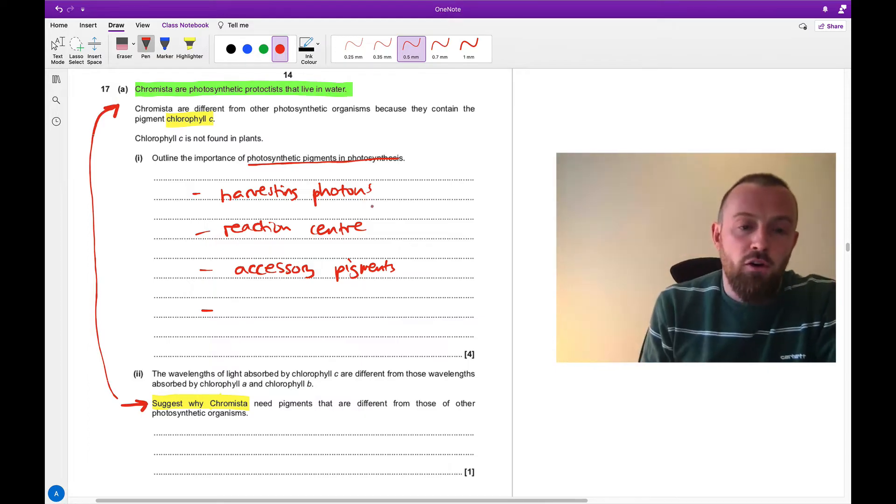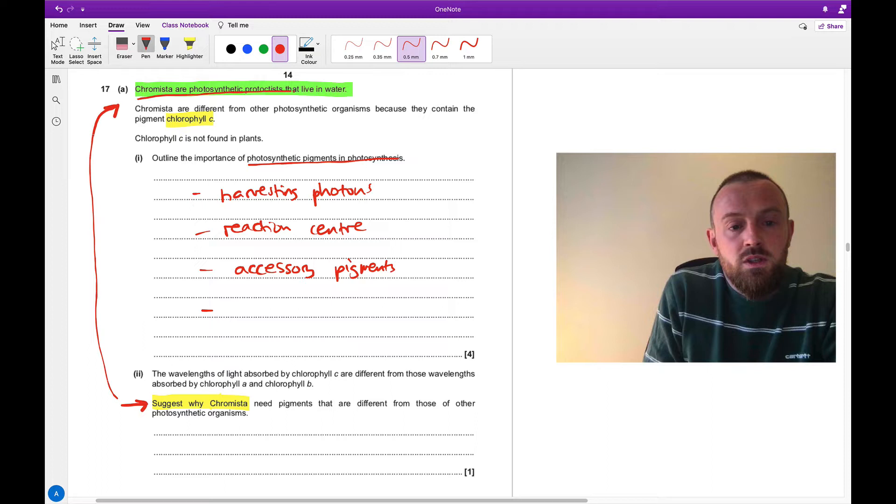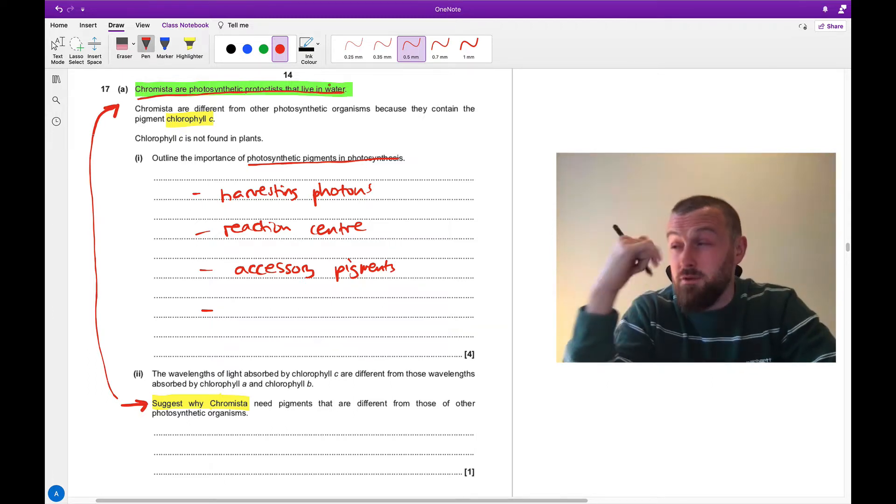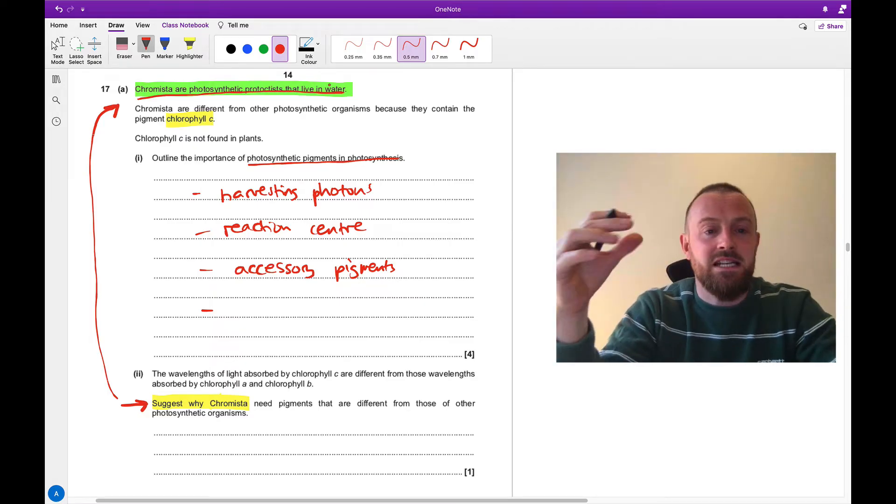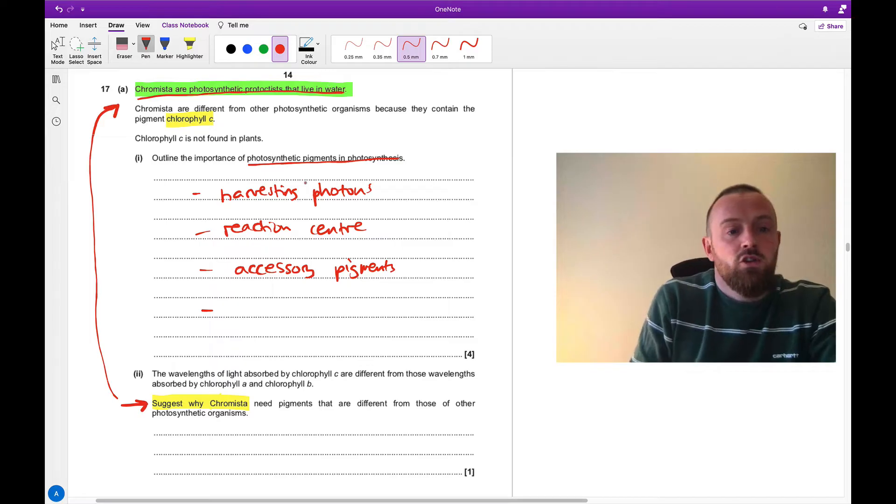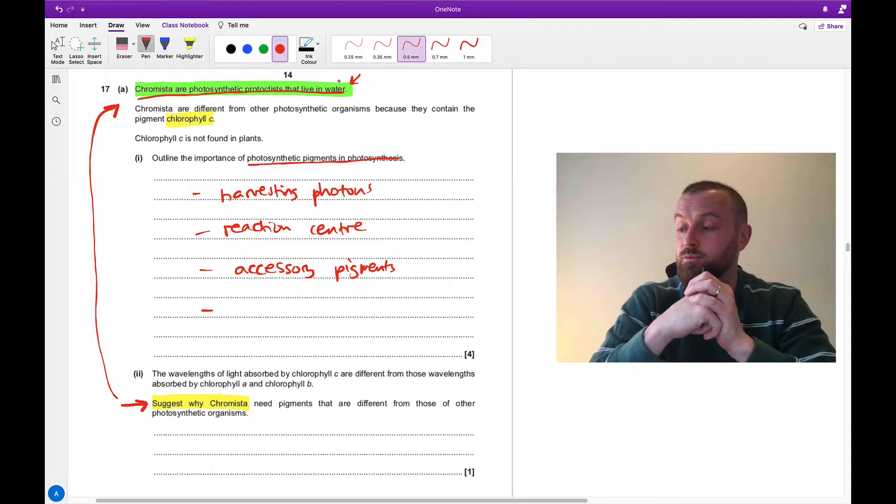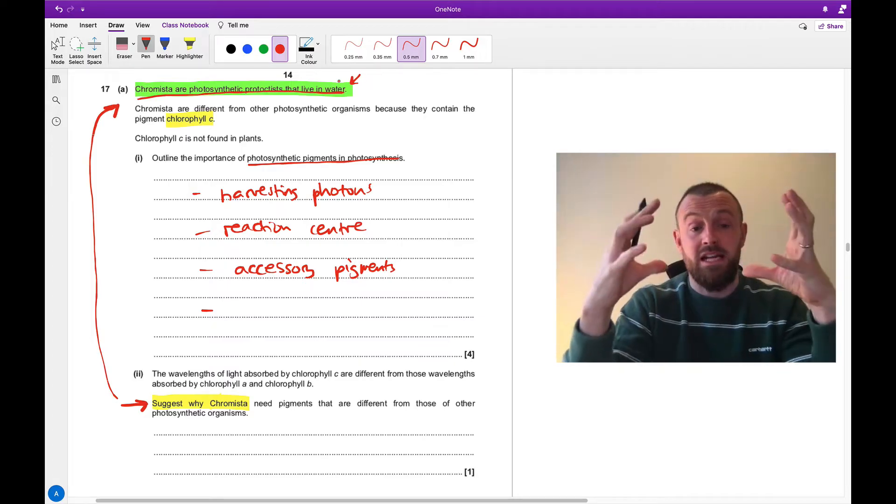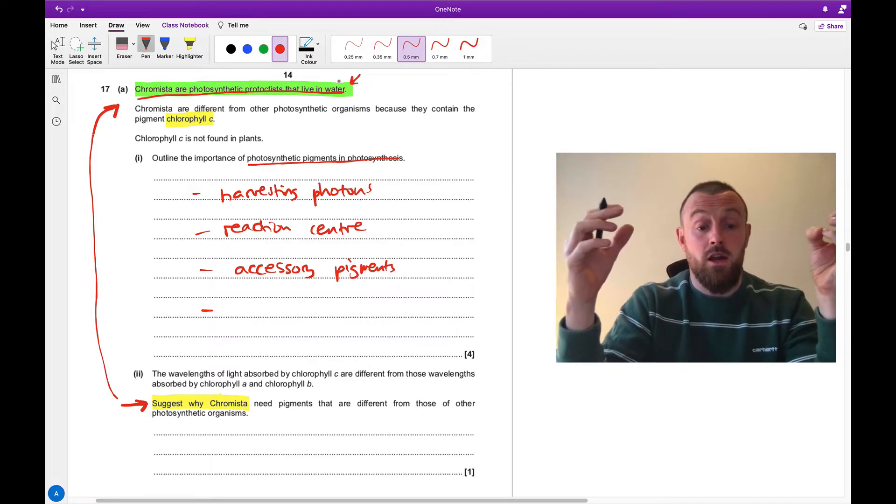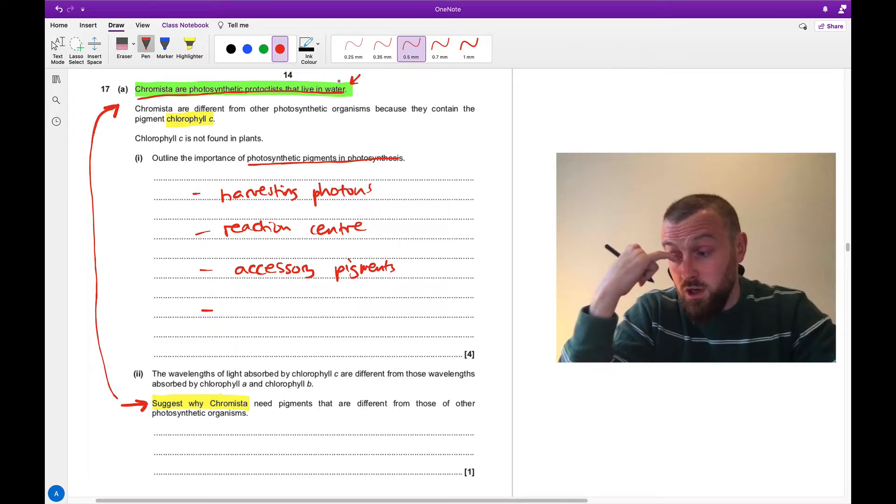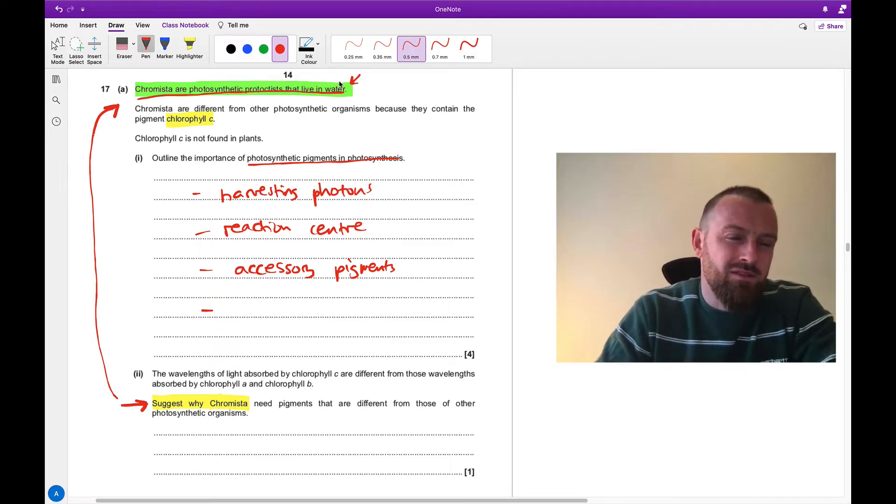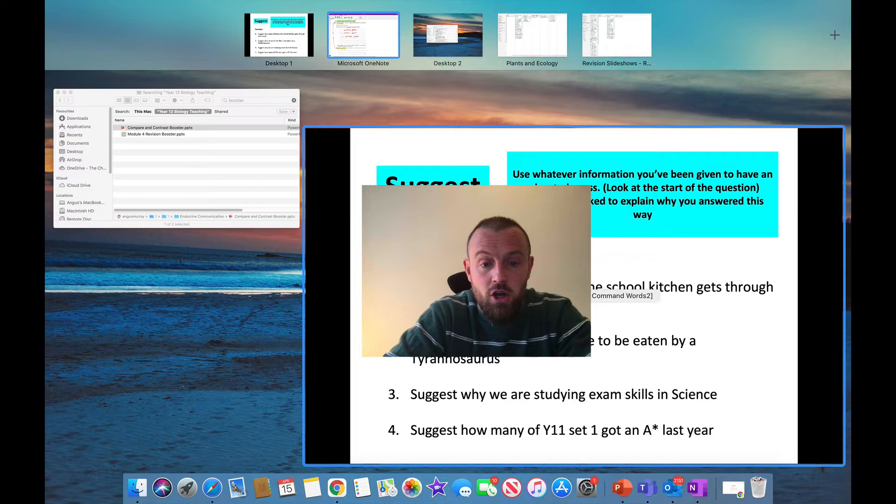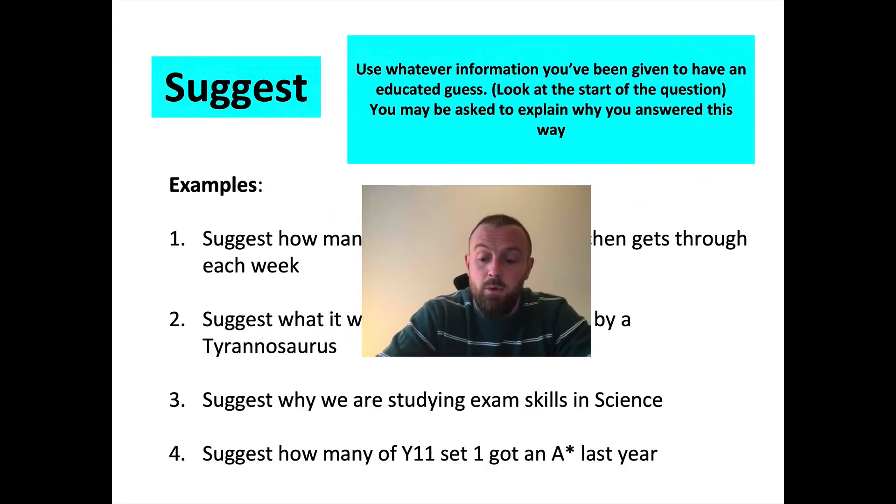At the start of the question, often you get given some information. Quite often these suggest questions are about new information that you've been given about some organism that you wouldn't necessarily have studied in detail, but you want to use that information. So here, chromista are photosynthetic protists that live in water. Because they live in water and water absorbs light, that is why they need different pigments than other photosynthetic organisms, because red light does not travel very far in water and it gets absorbed. The type of wavelength of light is different.